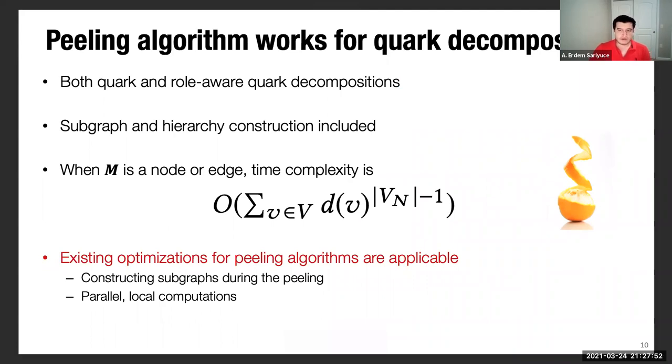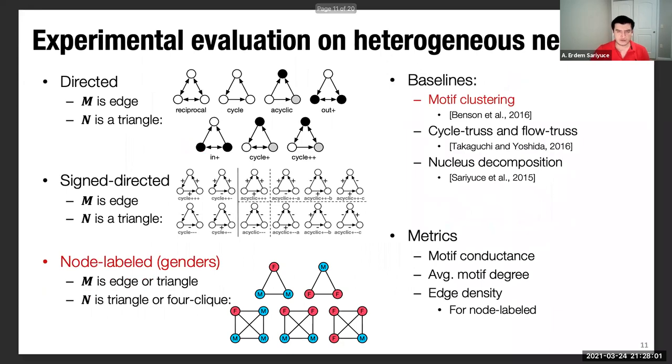Algorithmic appealing algorithm works for quark decomposition, just like the core and truss decomposition and all the existing optimizations for peeling algorithms are applicable, which is a very nice thing. We did a very comprehensive experimental evaluation for this work. I will only mention a few of them. We did experiments on directed networks, signed directed networks, and node labeled networks. We compared our results with respect to several baselines, including the motif clustering work, very nice work from Benson et al., and also our prior work on nucleus decomposition, which only works on simple undirected graphs.